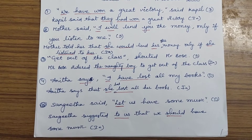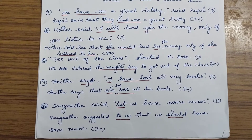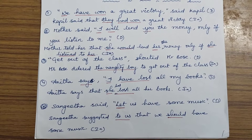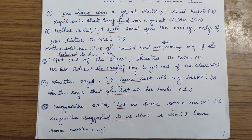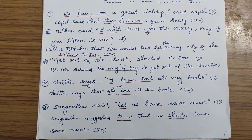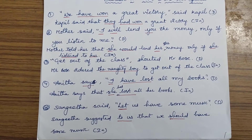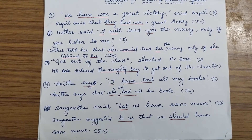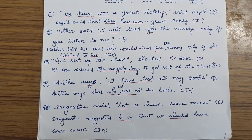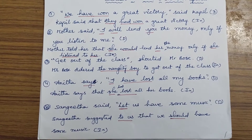So 'she would lend her the money' — 'you' (second person) changes according to the object. Since the object is not explicitly stated, we change it to 'her.' The reporting verb changes to 'told.' And 'me,' being the object at the end, also changes to 'her' — giving us 'only if she listened to her.'